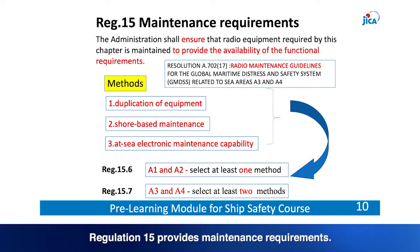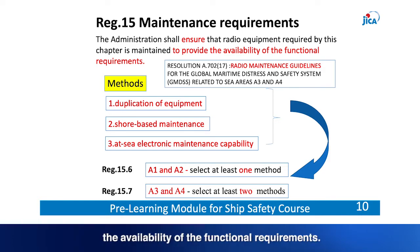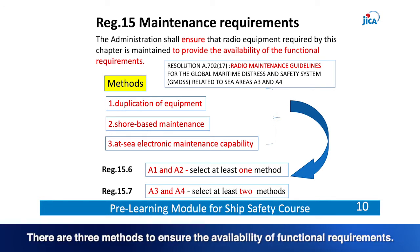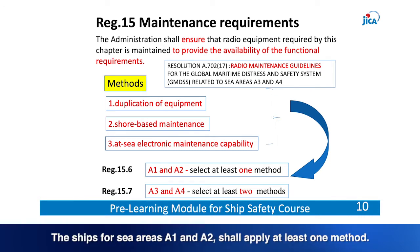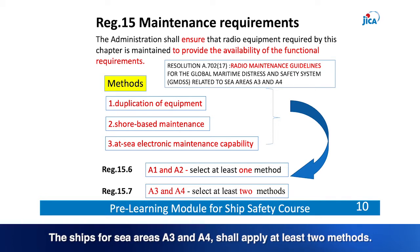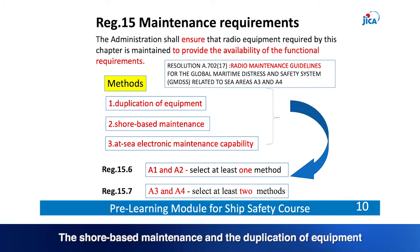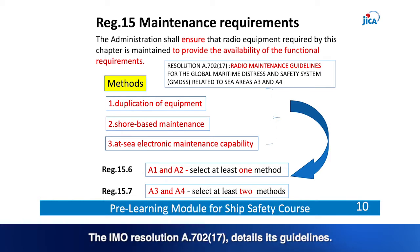Regulation 15 provides maintenance requirements. The administration shall ensure the availability of the functional requirements. There are three methods: duplication of equipment, shore-based maintenance, and at-sea electronic maintenance. Ships for sea areas A1 and A2 shall apply at least one method. Ships for sea areas A3 and A4 shall apply at least two methods. Shore-based maintenance combined with duplication of equipment is usually adopted by merchant ships. IMO Resolution A702(17) details the guidelines.